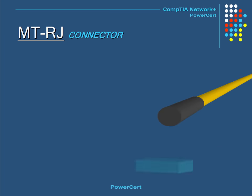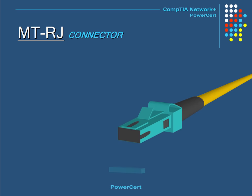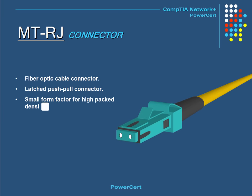This connector is called the MTRJ, which stands for Mechanical Transfer Registered Jack. This is a fiber optic cable connector. It uses a latched push-pull connection and has a small form factor used for high packed density.